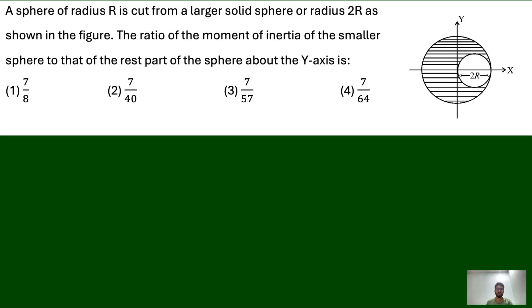Hello students, welcome to our channel Success Achievers. Today we are going to solve one question from NEET 2025. A sphere of radius R is cut from a larger solid sphere of radius 2R, as shown in the figure. We need to find the ratio of the moment of inertia of the smaller sphere to that of the rest part of the sphere about the y-axis.